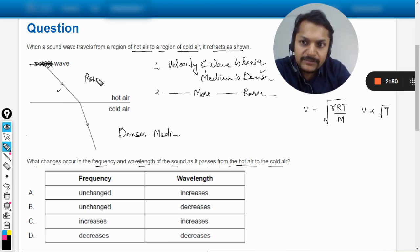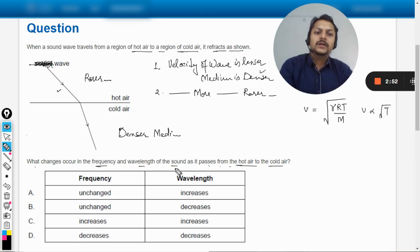So lesser speed means that cold air will be treated as denser medium for the sound and this would be treated as rarer medium. This is the first thing. Now the sound wave is moving from the rarer to denser.